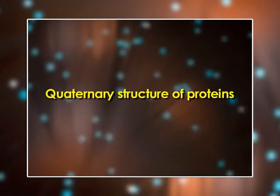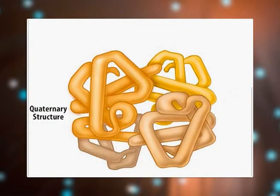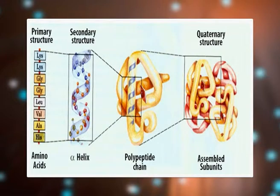The fourth one is quaternary structure. Many proteins are made up of multiple polypeptide chains, often referred to as protein subunits. These subunits may be the same, as in a homodimer, or different, as in a heterodimer. The quaternary structure refers to how these protein subunits interact with each other and arrange themselves to form a larger protein complex.